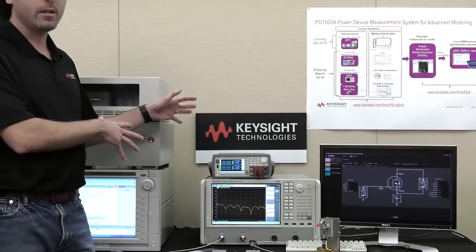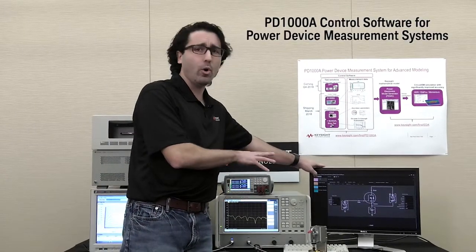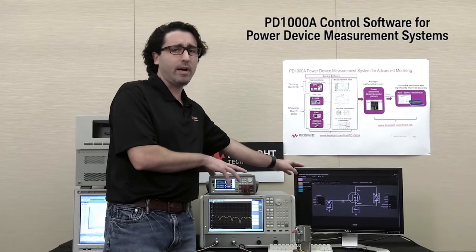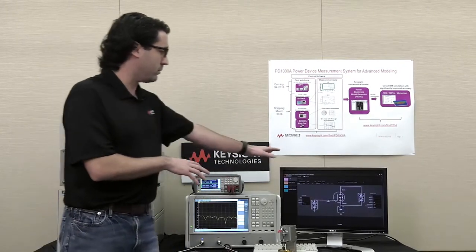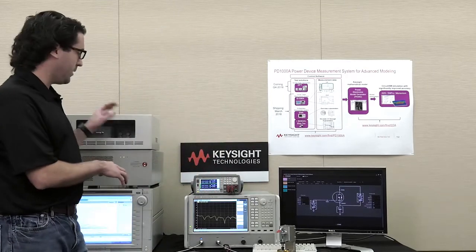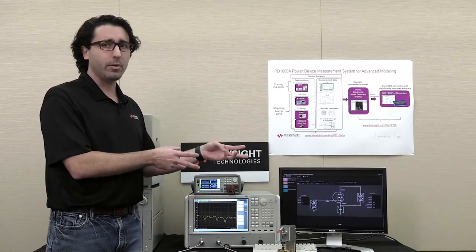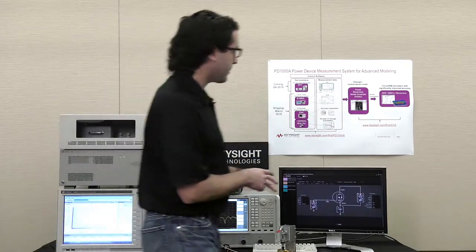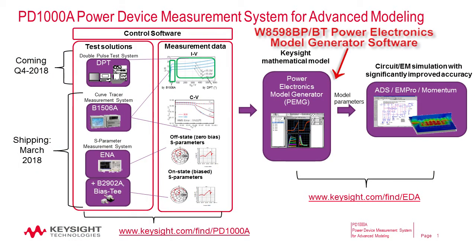This might look complicated, but we try to make it really streamlined with the software. The software controls all of the hardware, so there's minimal interaction with the hardware — the software does all the heavy lifting for you. Once you configure the software, it'll do all the measurements — your IV, CV, and S-parameter — and creates a bunch of files in a folder on your PC. You then take those files and feed them into a piece of software called the Power Electronics Model Generator, where you can create the actual model, with a whole range of tweaks depending on what type of model or parameters you want.